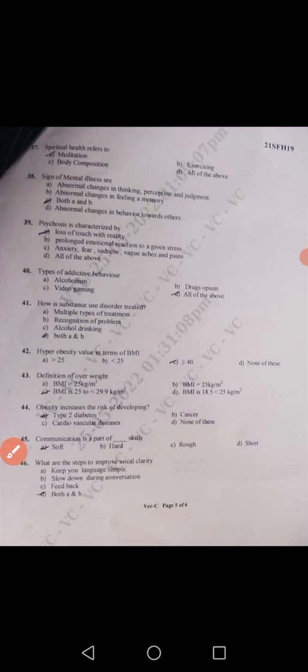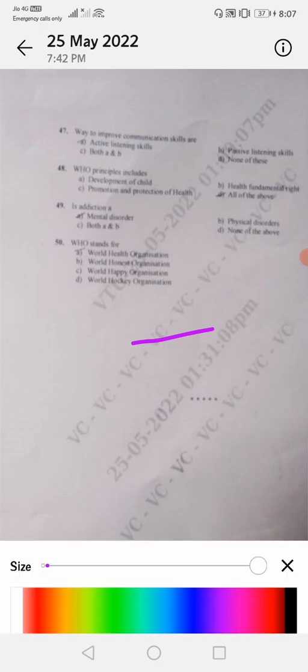Forty-seventh: ways to improve communication skills are active listening skills - answer is A. Forty-eighth: WHO principle includes development of child health, fundamental rate, promotion and protection of health, all the above - answer is D. Forty-ninth: is addiction mental disorder or physical disorder, both A and B, none of the above? Here I will go with mental disorder, answer A, but in most cases physical disorder also will come. I will go with more than 90 percent mental disorder and a little bit about physical disorder. I am just thinking which is going to be more correct.